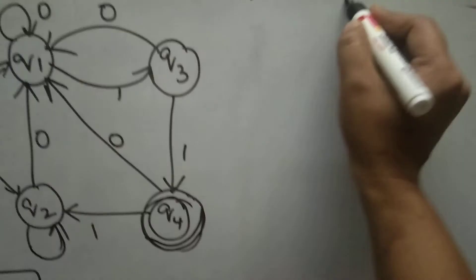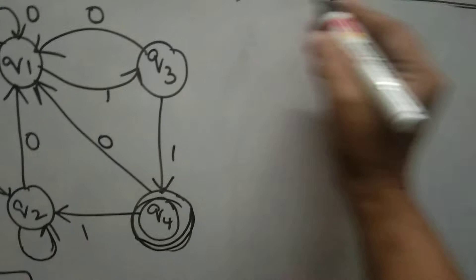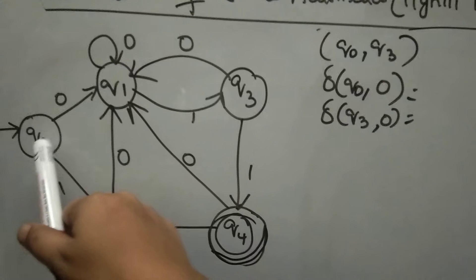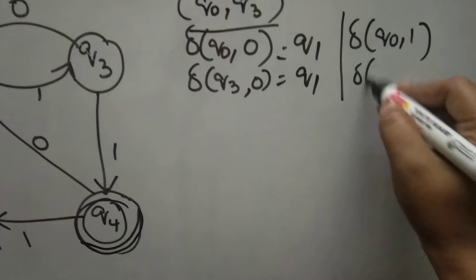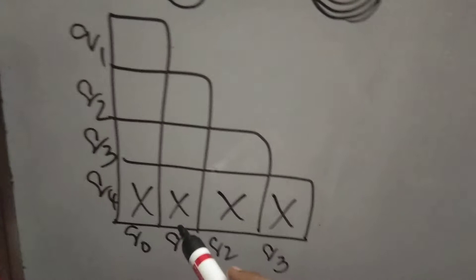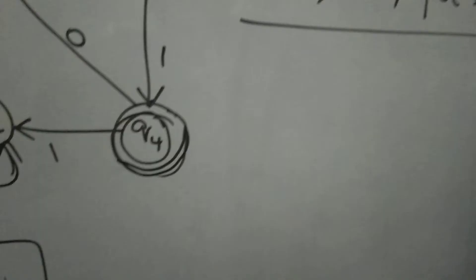Now we will consider the first pair Q0, Q3. You have to calculate delta of Q0 upon 0, Q3 upon 0. Q0 upon 0 is Q1. Q3 upon 0 is Q1. So Q1, Q1 pair, we don't have it. Check for Q0 upon 1, Q3 upon 1. Q0 upon 1 is Q2. Q3 upon 1 is Q4. Check whether Q2, Q4 marked or unmarked. Q2, Q4 is marked, so Q0, Q3 is also marked.